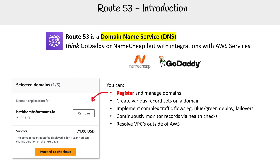I want to point out one distinct thing that Route 53 does that other cloud providers do not do, which is the ability to register domains. If you were to go use Microsoft, you can't do that there. And Google used to have Google Domains, but they gave it away to Squarespace. So it's basically just AWS that is allowing you to still register domains directly, which is really interesting.